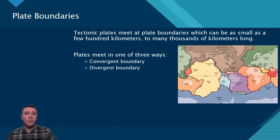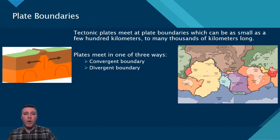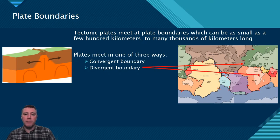A divergent boundary is where two plates are separating from one another. Perhaps the most famous example is the Mid-Atlantic Ridge that snakes its way along the Atlantic Ocean's sea floor, traveling from north to south. Another example of a divergent boundary can be seen in the eastern portion of Africa, where the Somalian Plate is diverging from the rest of Africa's Nubian Plate.